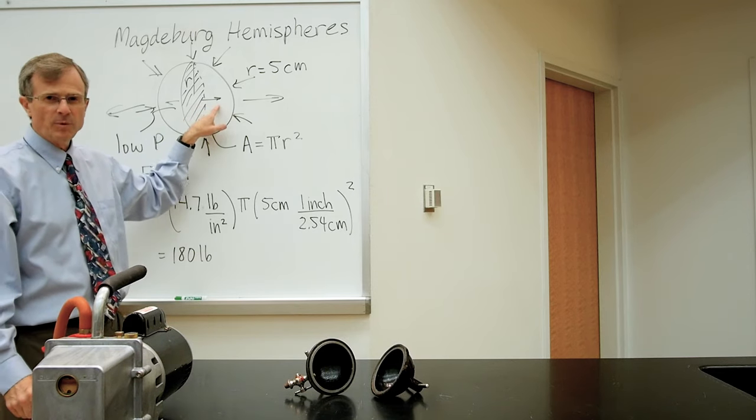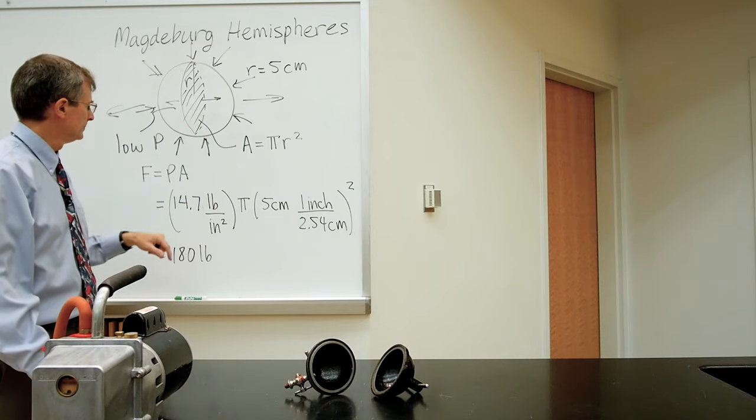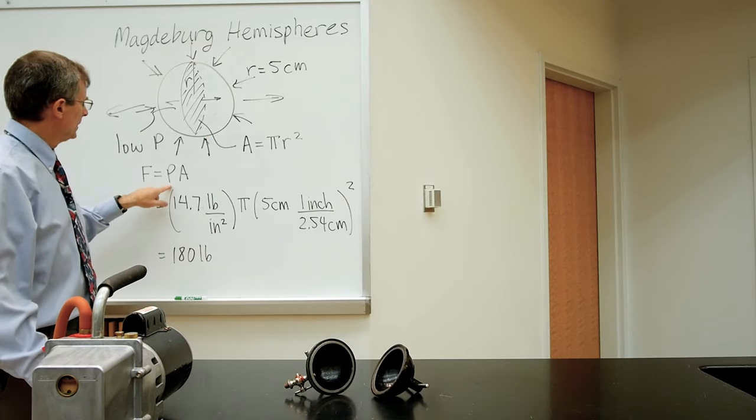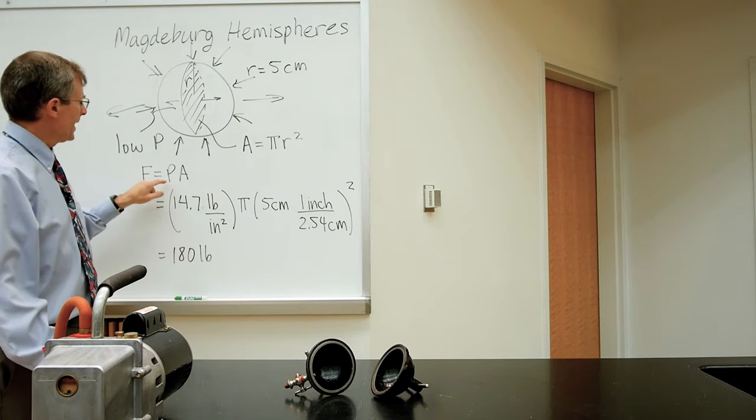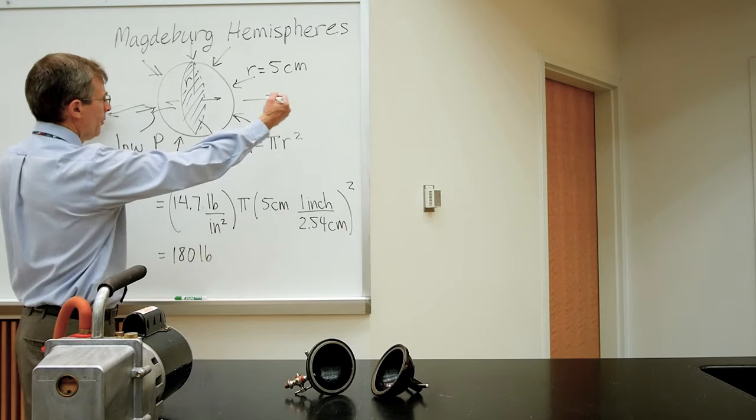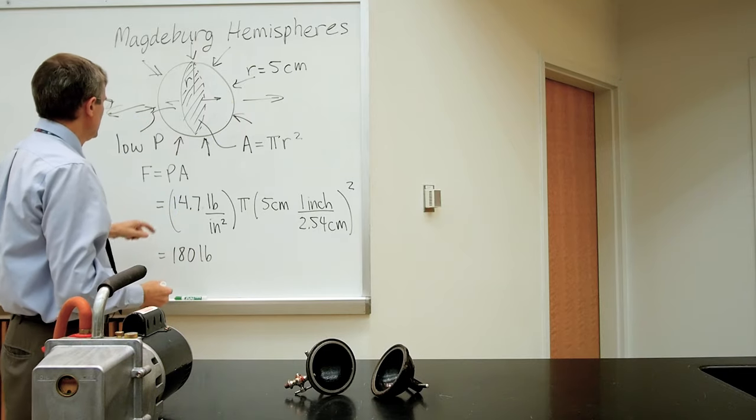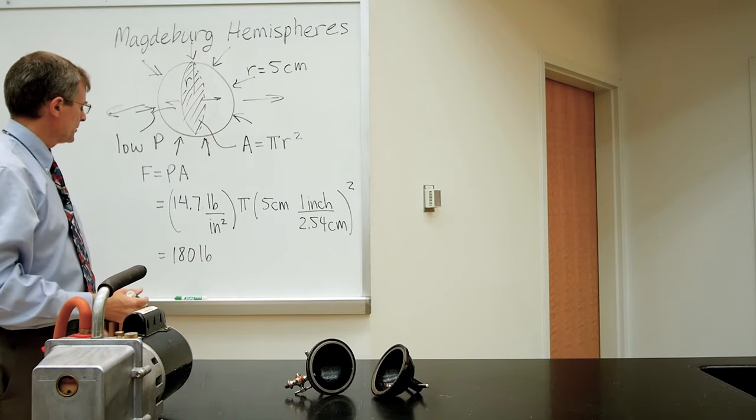So the force needed to apply, assuming that the pressure was zero inside (which it wasn't quite, admittedly close to zero), will be the pressure outside. We're going to have to overcome that pressure of the outside pushing in, times this cross-sectional area.